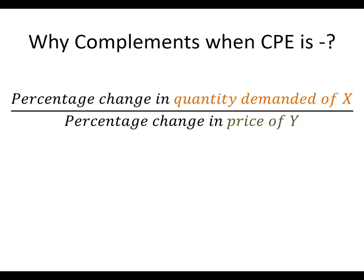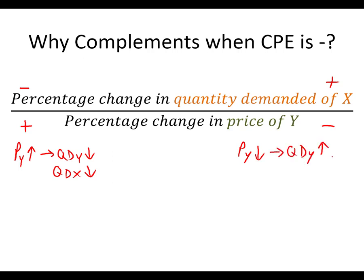When cross-price elasticity is negative, there are a couple of ways we could get that: a positive denominator with a negative numerator, or a negative denominator with a positive numerator. Say the price of y goes up — from the law of demand, the quantity demanded of y falls, and from the negative cross-price elasticity, the quantity demanded of x also falls. You're using less y, so you need less x to go with it. If the price of y goes down, quantity demanded of y goes up, and quantity demanded of x also goes up — you're using more y and need more x. That means they're complements.